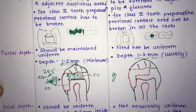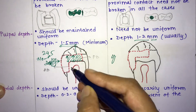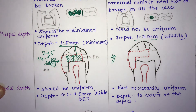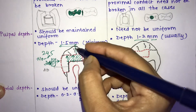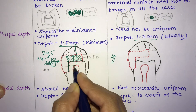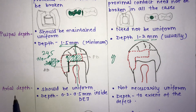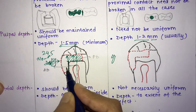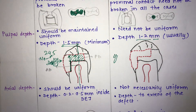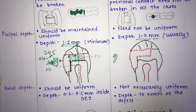The next difference is axial depth, which applies to class 2 preparations. The axial wall is parallel to the long axis of the tooth. In amalgam, the axial depth must be uniform and 0.2 to 0.5 mm inside the dentinoenamel junction. In composite, it need not be uniform — the axial depth extends only as far as the defect requires.